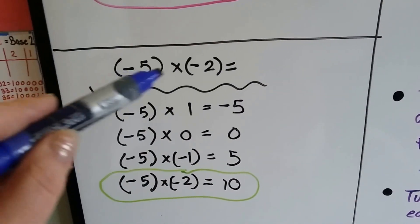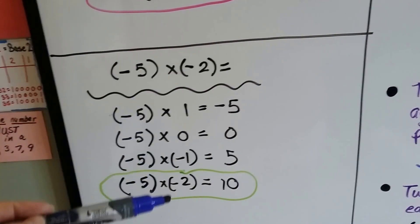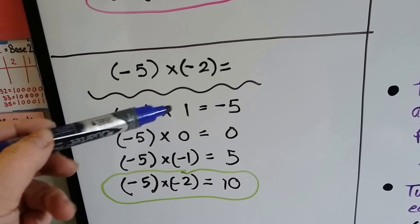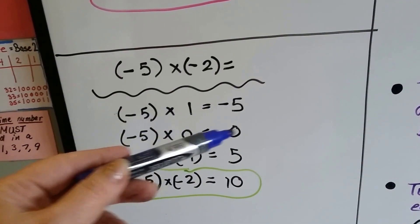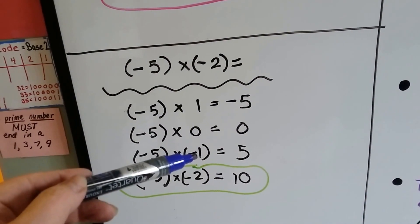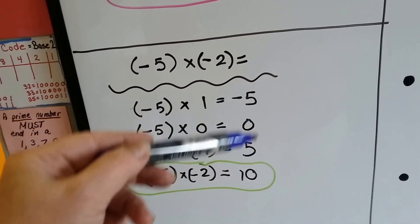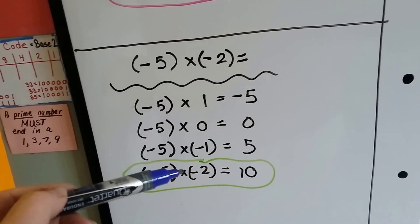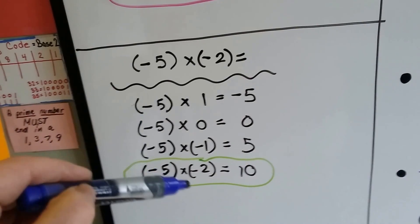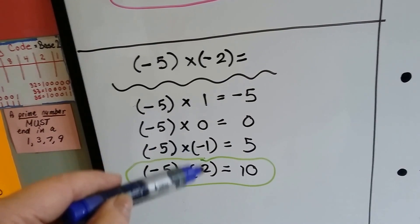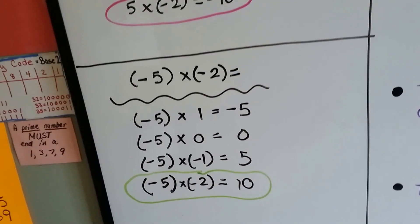If we have a negative times a negative, we can still use a pattern. Negative five times one is negative five. Negative five times zero is zero. Negative five times negative one is going to be positive five, because it's on the opposite side of zero on the number line. So negative five times negative two is positive ten. They have like signs — the negative five and the negative two — so the answer is positive.